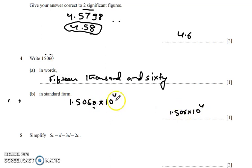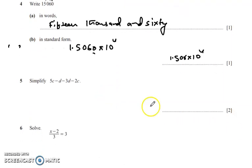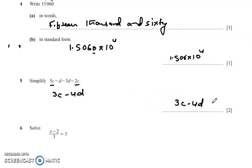Now simplify the like terms. We add or subtract like terms. We have 5c and 2c, giving 3c. Then minus d and minus 3d gives minus 4d. So the final answer is 3c − 4d.